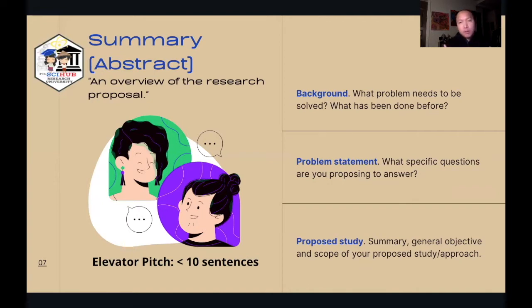Based on my experience of writing research proposals, typically there are three main concepts that you're trying to establish or provide in an abstract. The first is background. What problem needs to be solved? What is the broad area that covers your area of study?